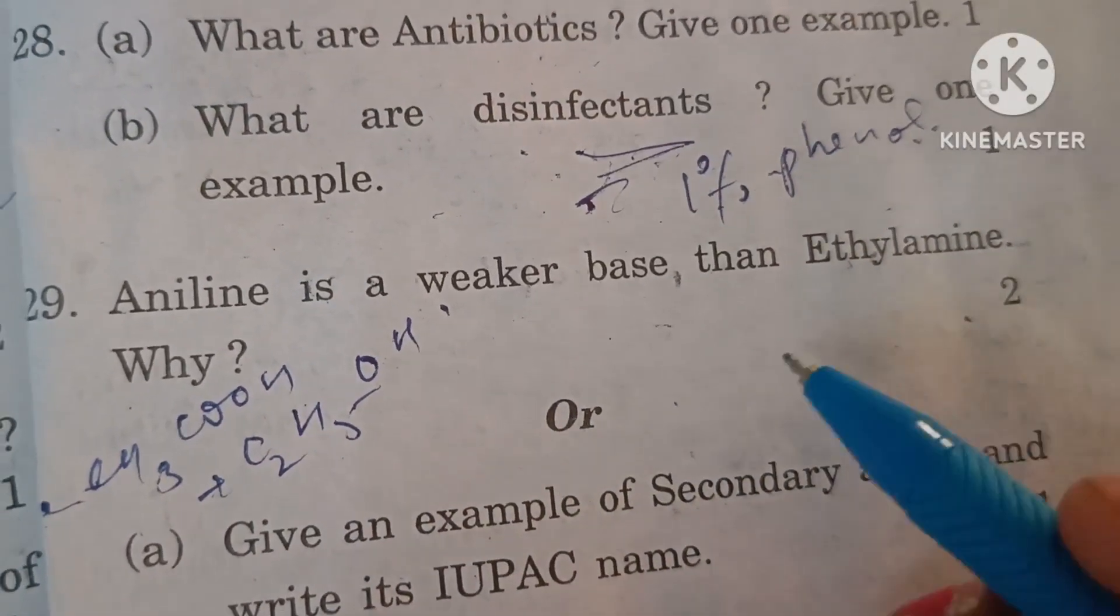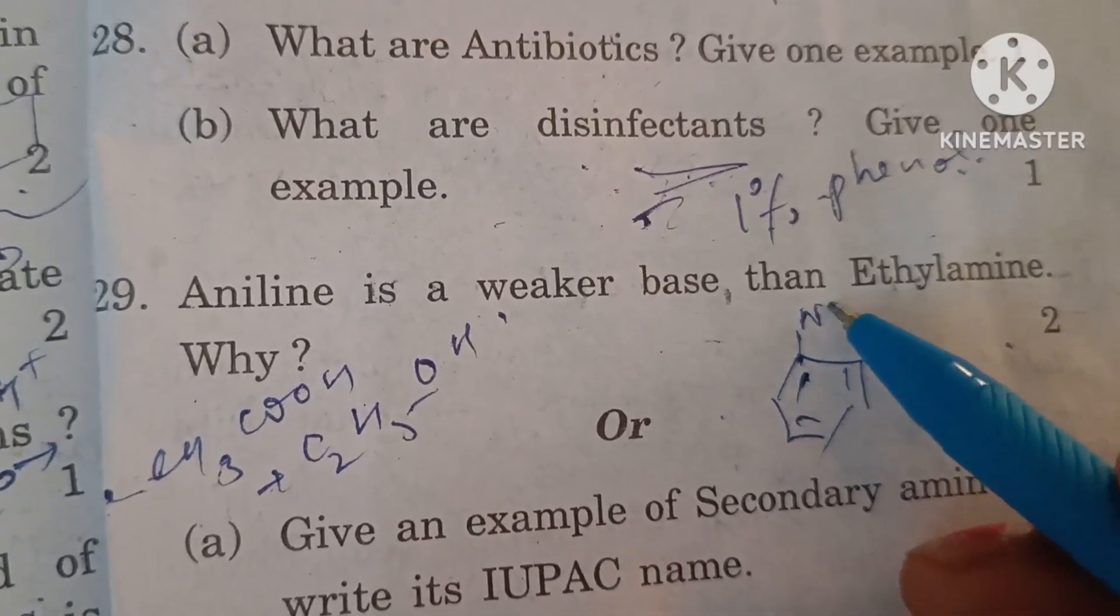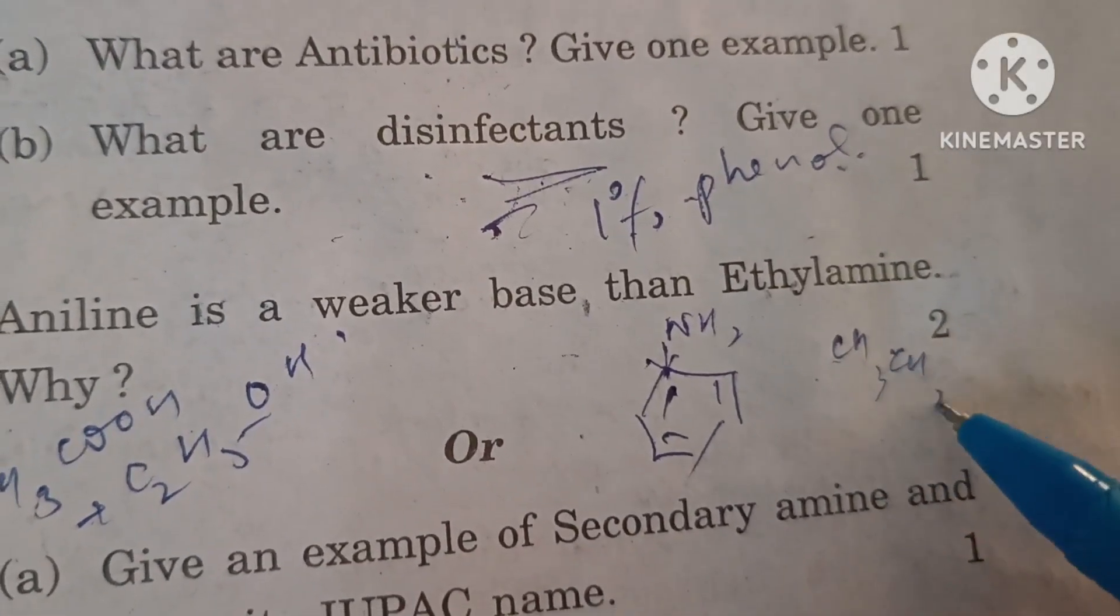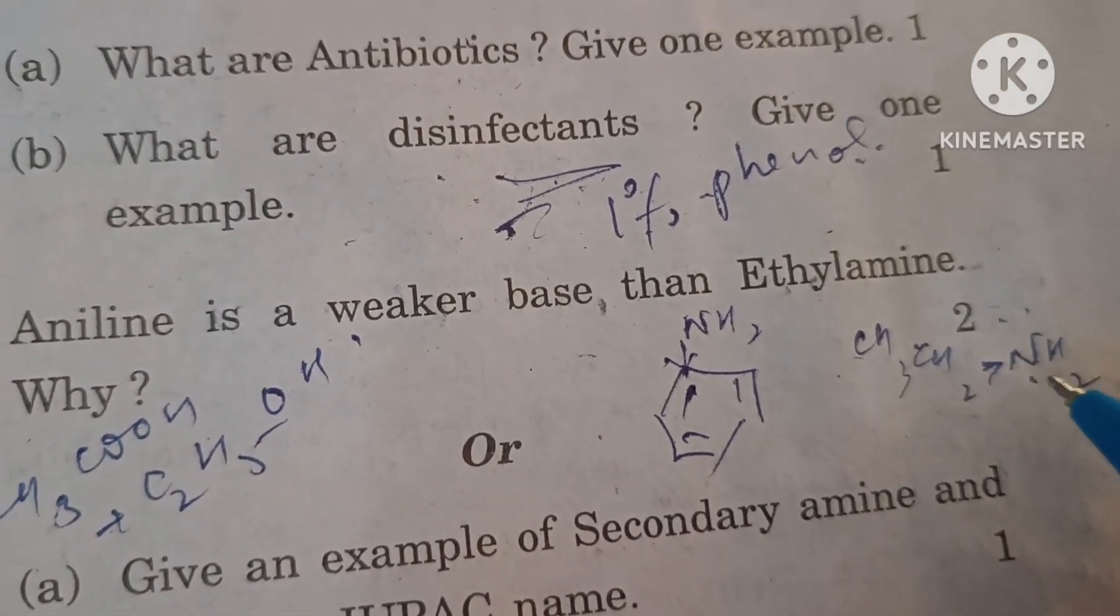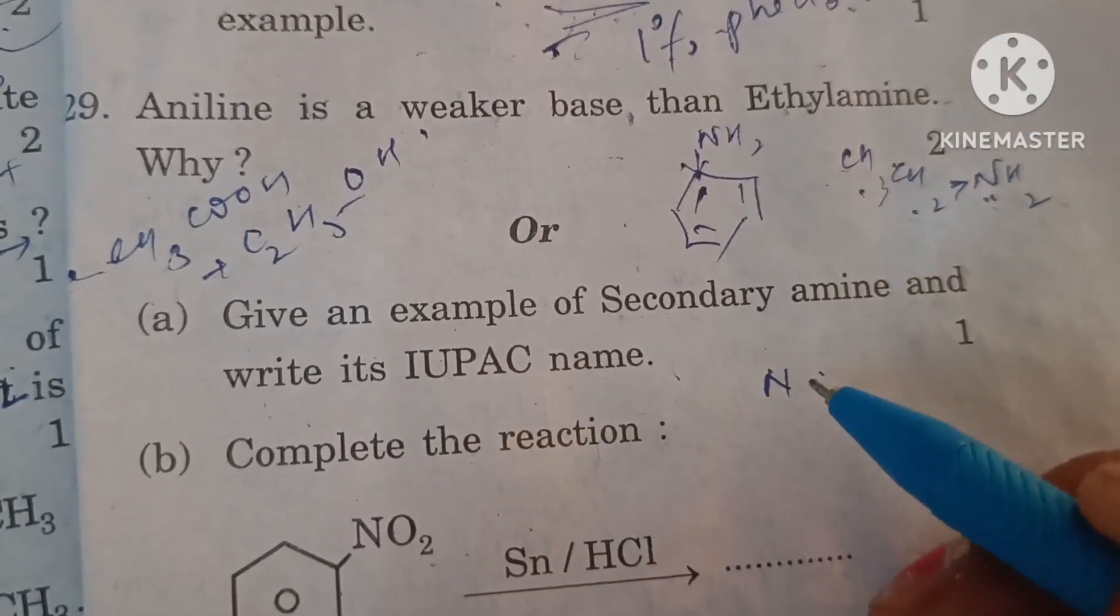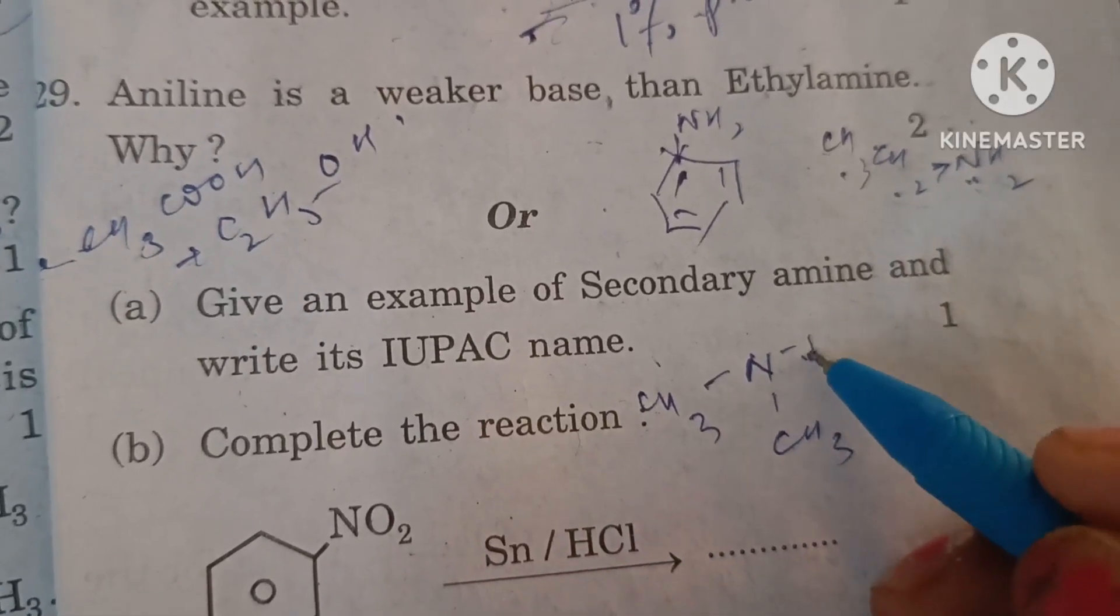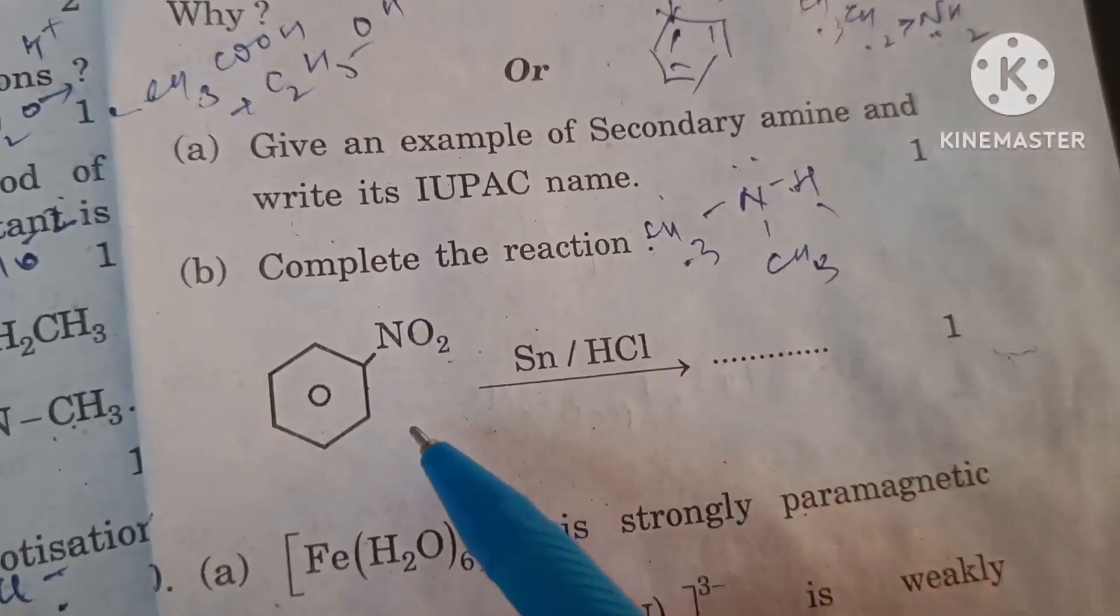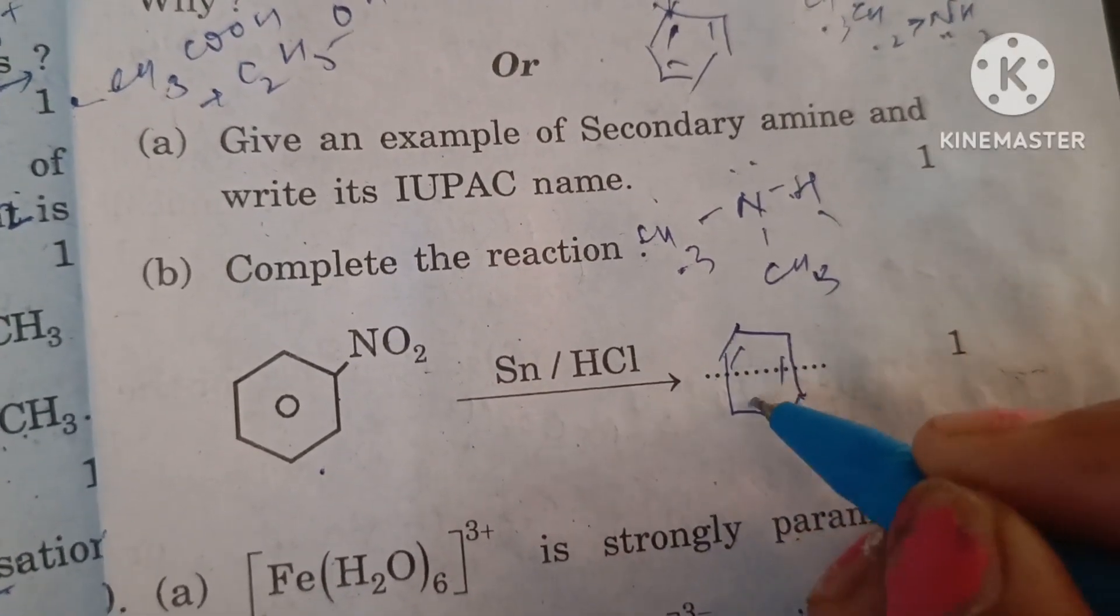Aniline is a weaker base than ethylamine. This is because of inductive effect. In aniline the phenyl group is electron withdrawing in nature, whereas in ethylamine the ethyl group is electron releasing in nature, increases the availability of electrons, so increases the basic character. Give an example of secondary amine and write its IUPAC name. When two alkyl groups are attached to nitrogen atom then the amine is called secondary amine. IUPAC name will be N-methylmethanamine. Nitrobenzene on reduction with tin and HCl will form aniline.